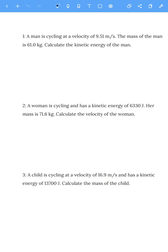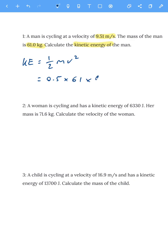Let's look at question one. A man is cycling at a velocity — technically it should be speed, but velocity is okay as long as it's in the same direction — of 9.51 meters per second. The mass of the man is 61 kilograms. Calculate the kinetic energy. So kinetic energy is half mv squared, and it's just a simple case of putting the numbers in: 0.5 times the mass of 61 times 9.51 squared. Pop that in your calculator and that's 2,758 joules of kinetic energy.